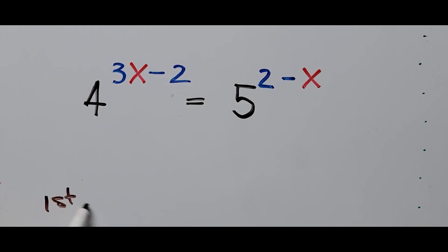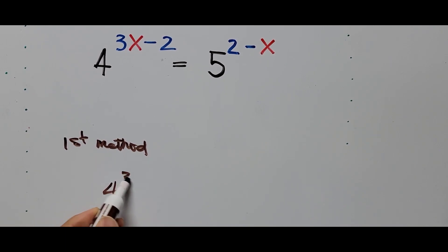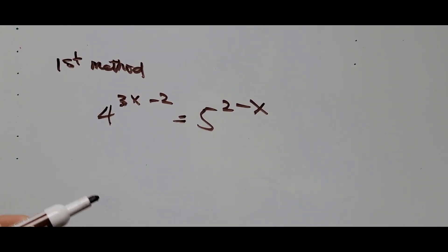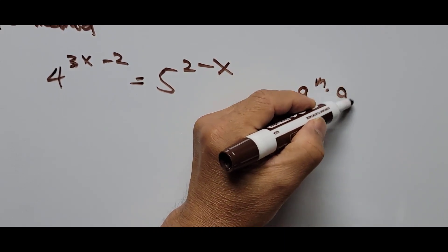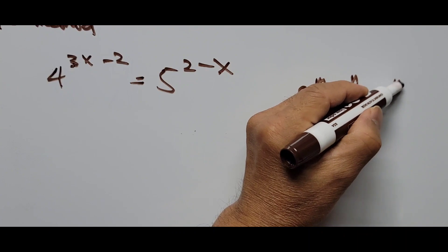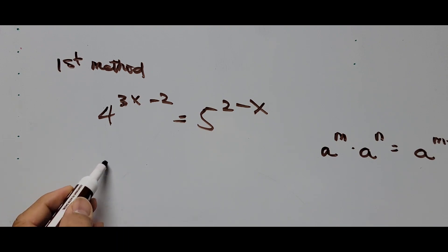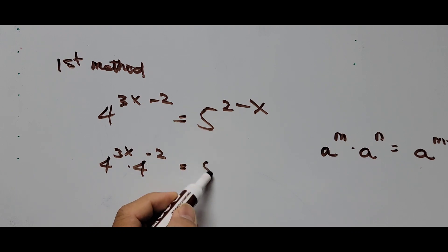Here is the first method, using the laws of exponents. Let's write the equation again: 4 raised to the power 3x minus 2 equals 5 raised to the power 2 minus x. We simplify the exponents on both sides using the rule a raised to m times a raised to n equals a raised to m plus n, so we're adding the exponents. The left side becomes 4 raised to 3x times 4 raised to negative 2.